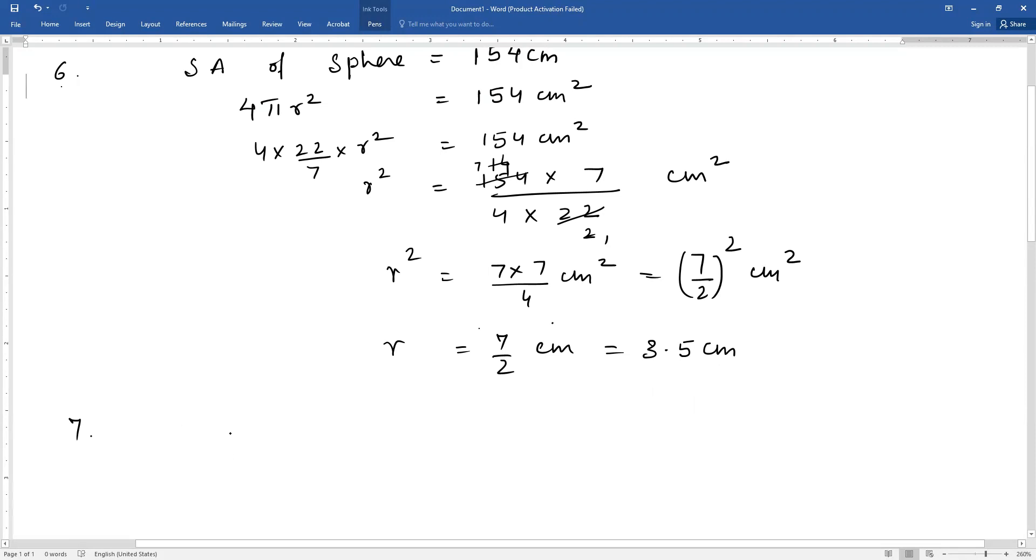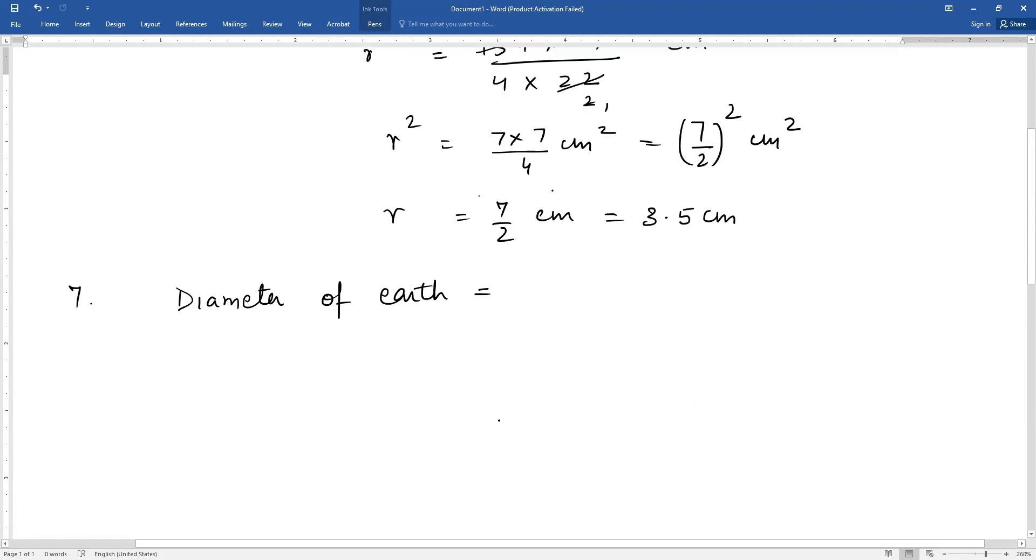The diameter of moon is approximately 1/4th the diameter of earth. So we assume diameter of earth is 2R. You can take it in terms of radius also. So diameter of moon: it is 1 by 4th of the diameter of earth. Diameter of moon is 1/4th the diameter of earth.